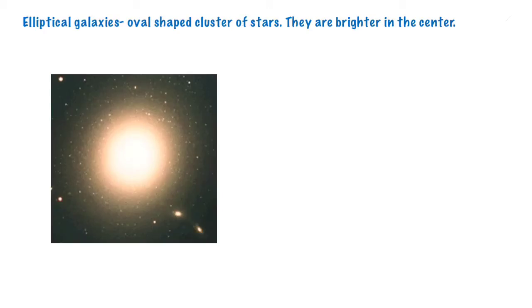Elliptical galaxies are oval-shaped clusters of stars that have brighter centers than their outside edges.